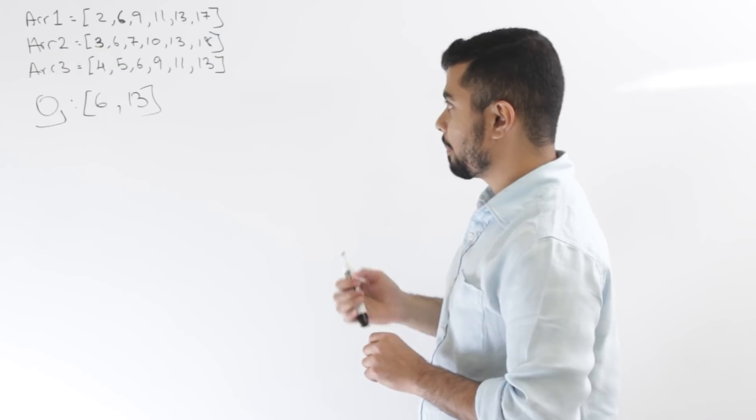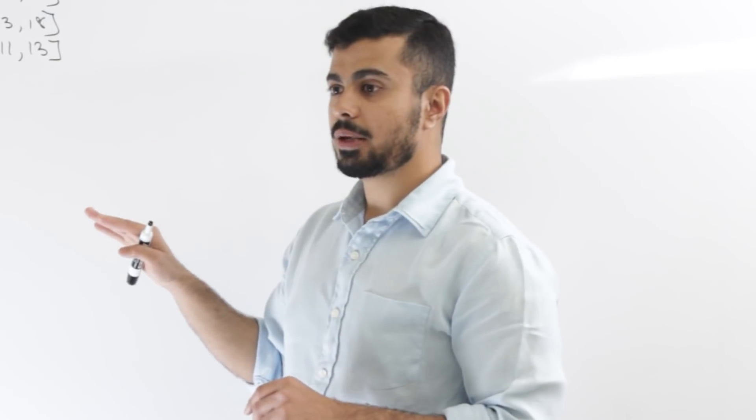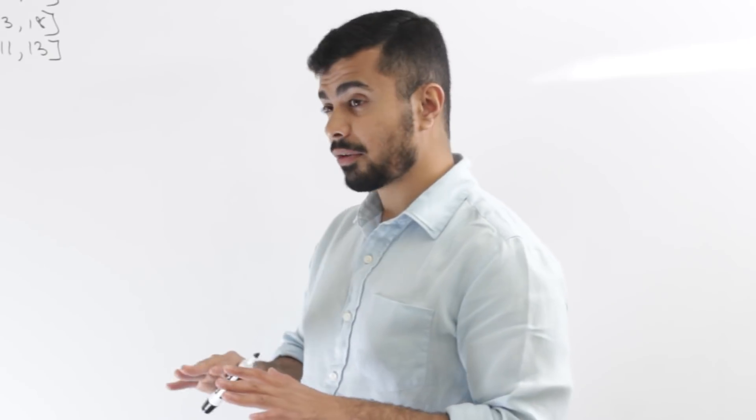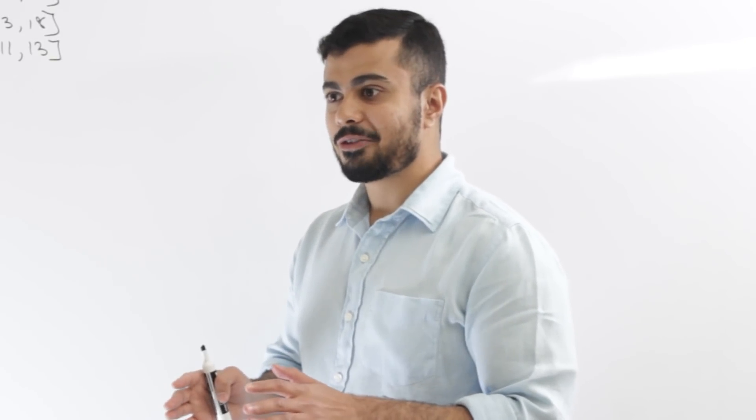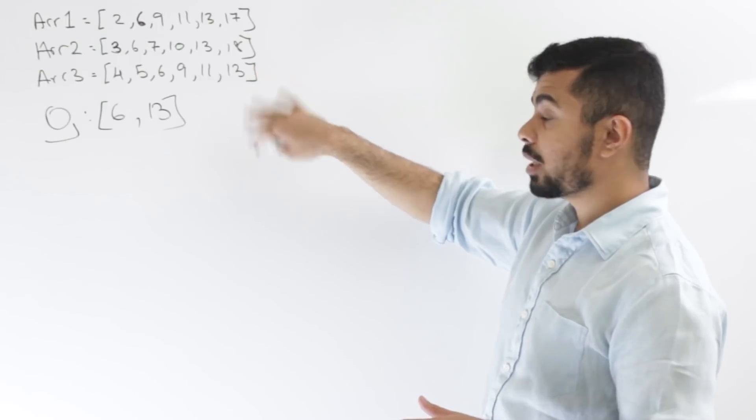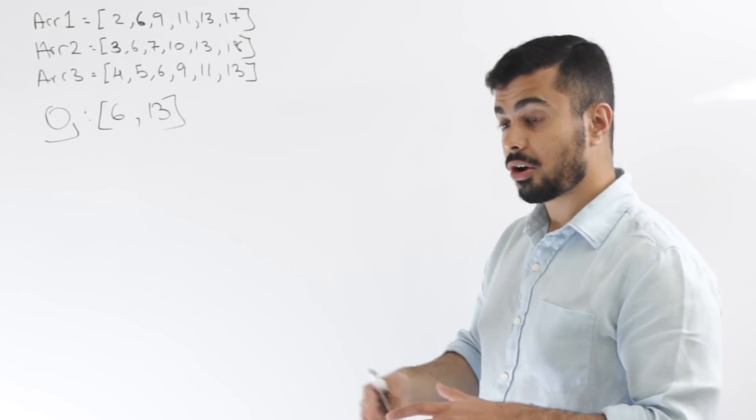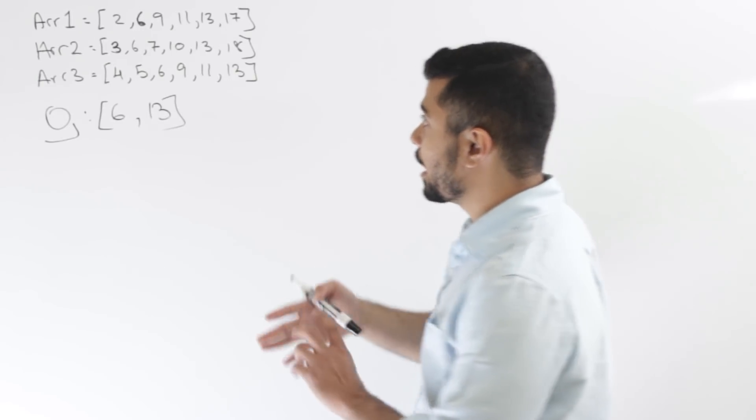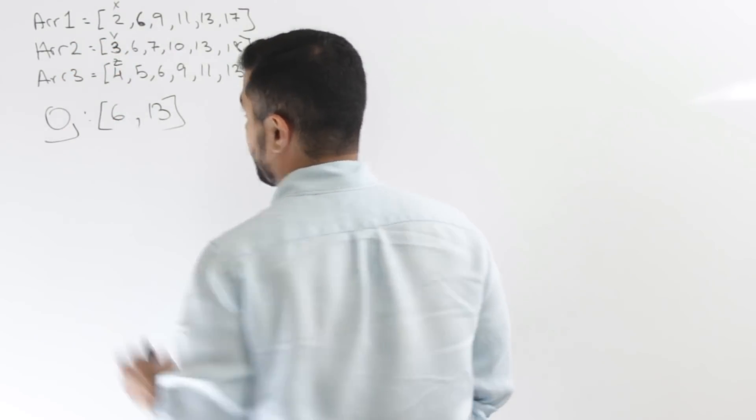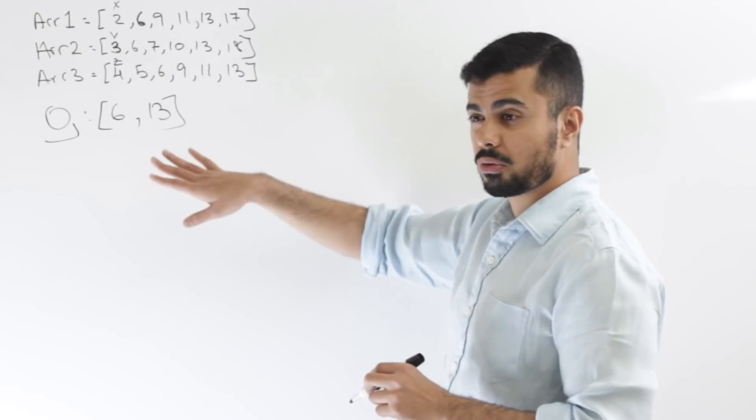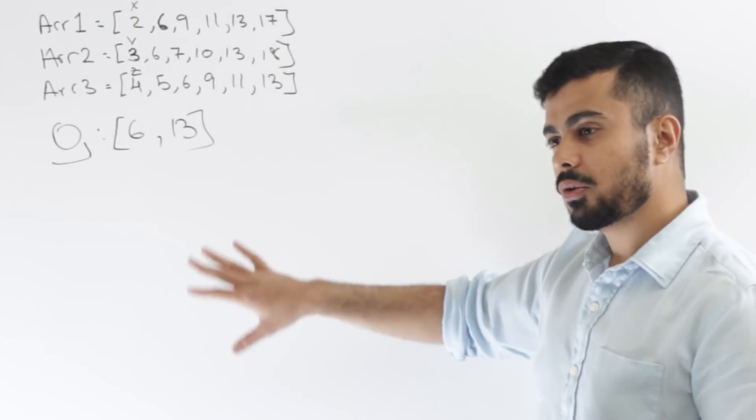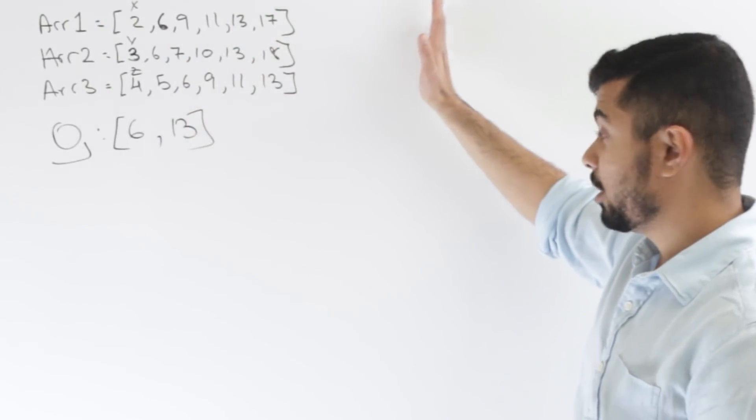So let's see how we can approach this. I will somehow need to keep track of my index. So I need to iterate on all three of these arrays at once. Won't really make sense for me to have nested loops. That would be a very inefficient algorithm. So let's say I'm iterating on all three of these at once. And in that case, I'll need to keep track of the index where I'm at on all three of these at once, at the same time. So let's say the index for array one I name it as X, for array two I name it as Y, and for array three I name it as Z.